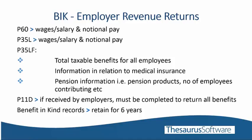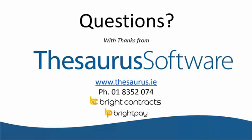Very recently, we have learnt that the P35L for 2017 will include two additional fields for employees: one for share-based remuneration, and a second for a taxable benefits field at employee level. Currently the P35LF reports the total taxable benefits figure for all employees, but from 2017 there will also be a taxable benefits figure for each individual employee. Any employer that receives a P11D is obliged to complete it and include all benefits provided to employees. Benefit in Kind records should be retained for a period of six years.